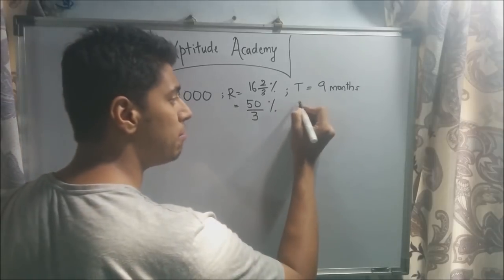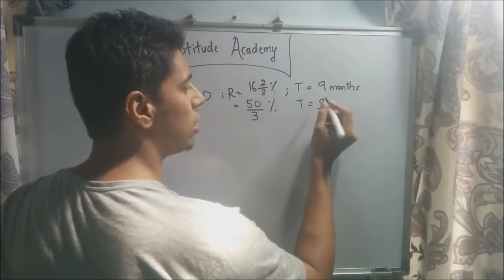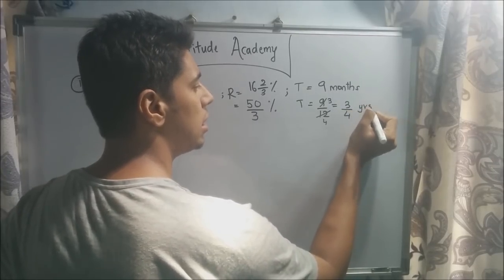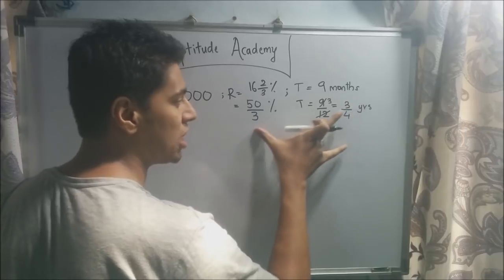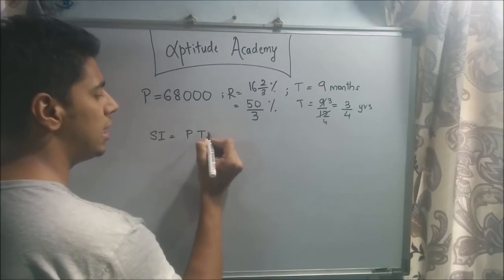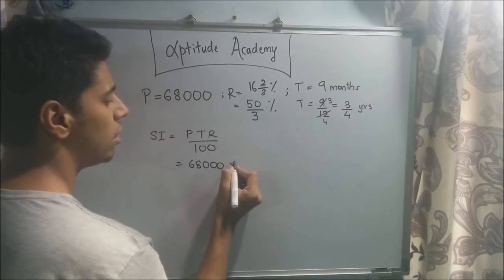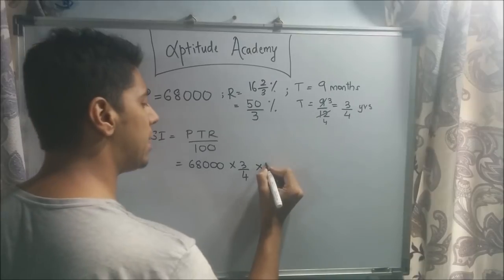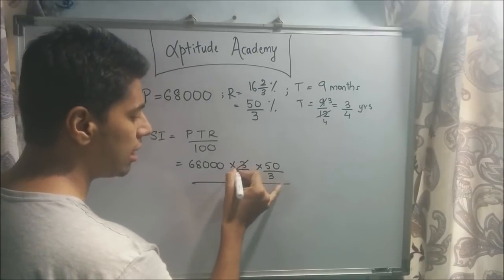Time is in months and we want it in years, so we divide by 12. Nine months divided by 12 gives us 3/4 years. Now to find the simple interest: SI = PTR divided by 100. P is 68,000, T is 3/4, and R is 50/3.